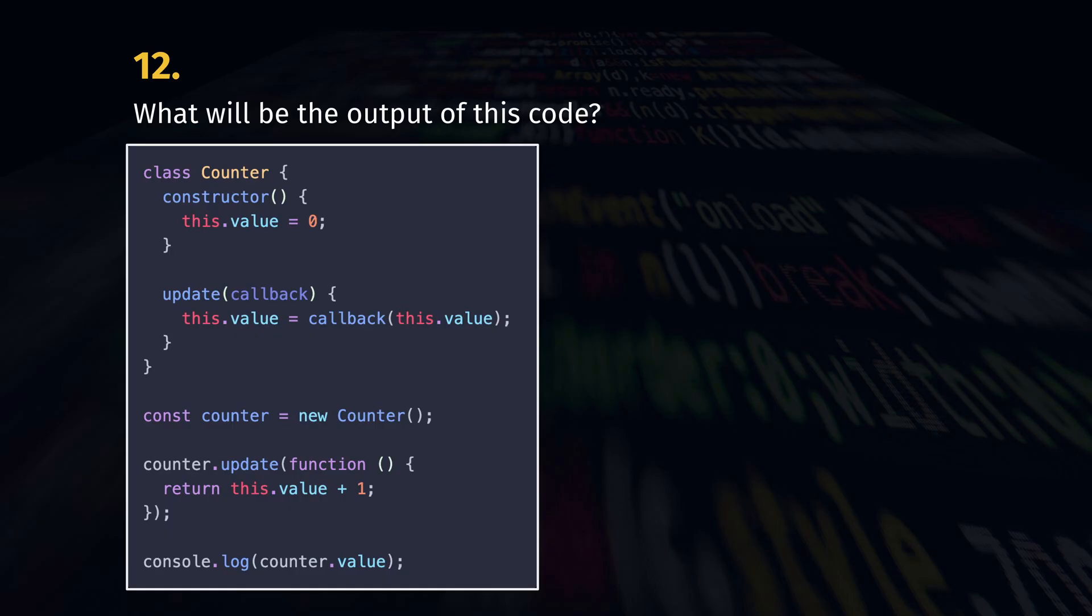What will be the output of this code? It's NaN, not a number. We tried to access the value from this but this in our newly created function does not refer to our object counter and so the value is undefined.